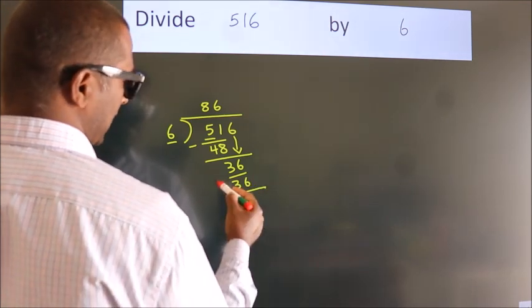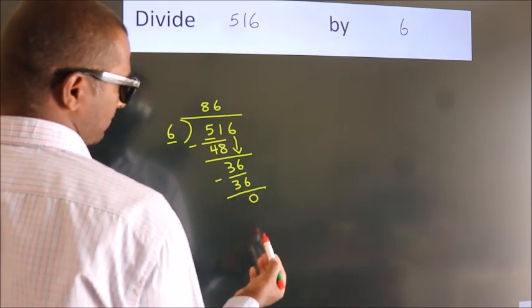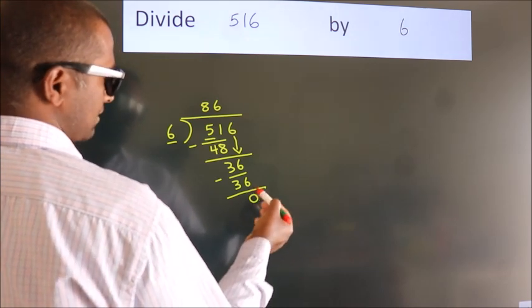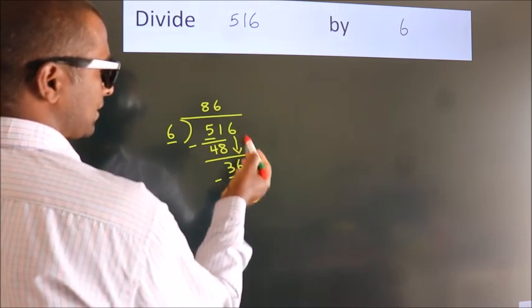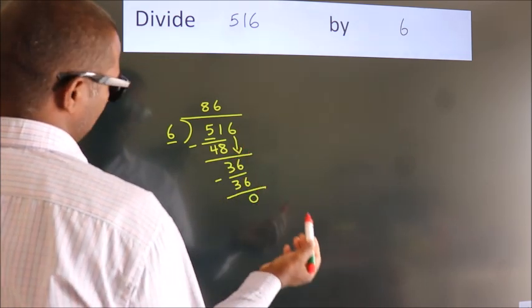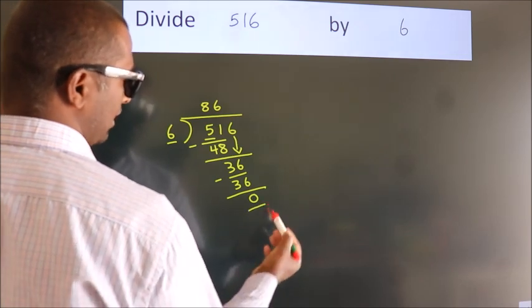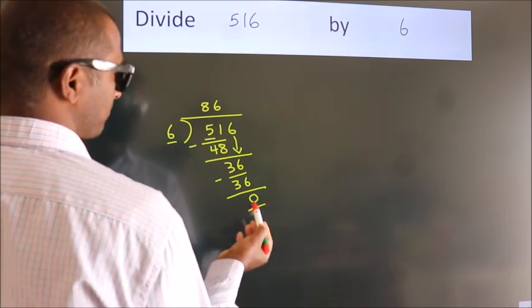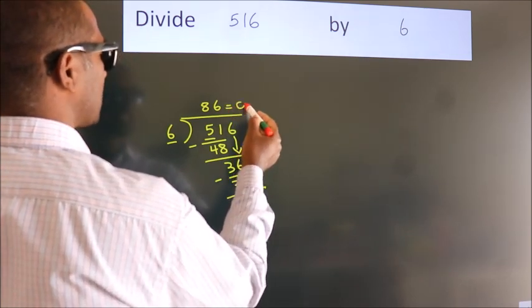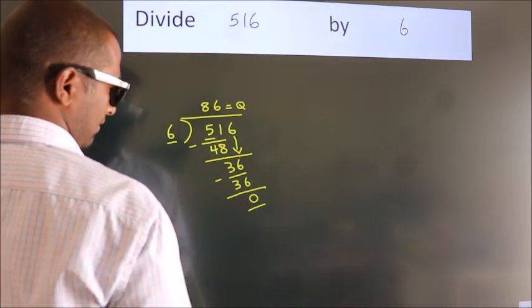Now we subtract. We get 0. After this, no more numbers to bring down, and we got remainder 0. So this is our quotient.